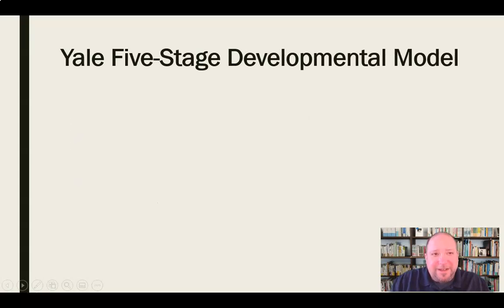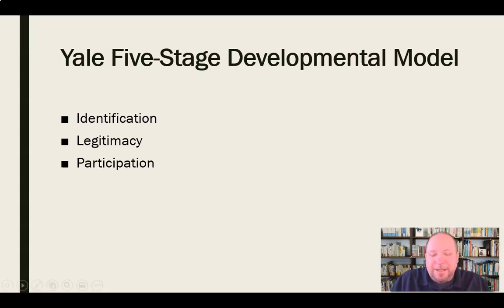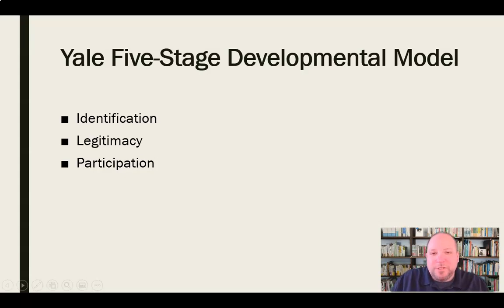The Yale five-stage model has five stages. We start with identification — identification of a need, a misjustice, or a particular product or candidate we want to promote, since it can be used for all three types of campaigns. Then we focus on legitimacy — getting people to take it seriously and recognize the legitimacy of the effort. Then we get participation, drawing people in. Campaigns dramatize the artifact to pull people in and start to grow participation.